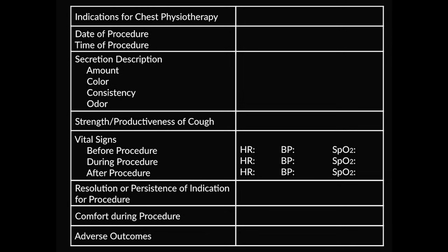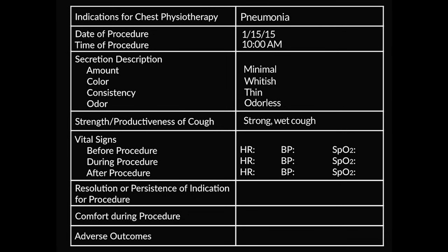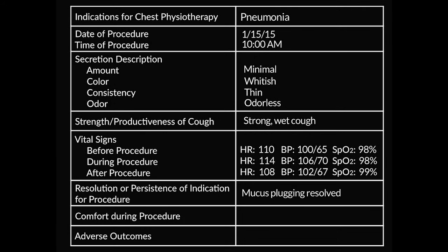Following chest physiotherapy, you should document the following information in the patient's medical record: the indication for the procedure, the date and time of the procedure, the characteristics of any secretions including amount, color, consistency, and odor, the strength and productiveness of the patient's cough, the vital signs before, during, and after the procedure, the resolution or persistence of the indication for the procedure, the patient's comfort during the procedure, and any adverse outcomes.